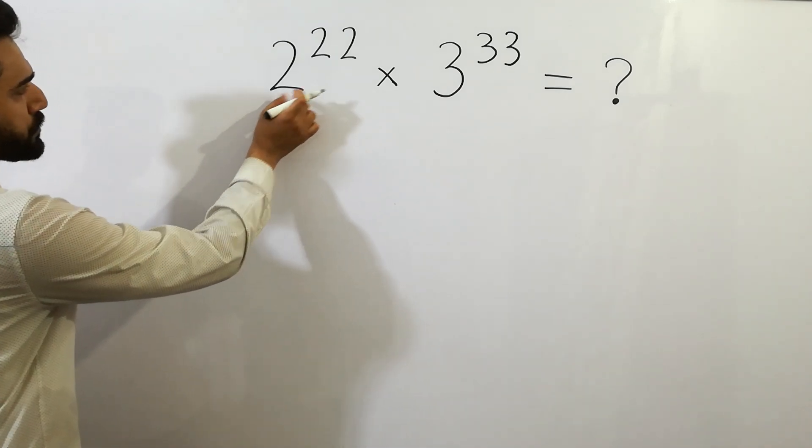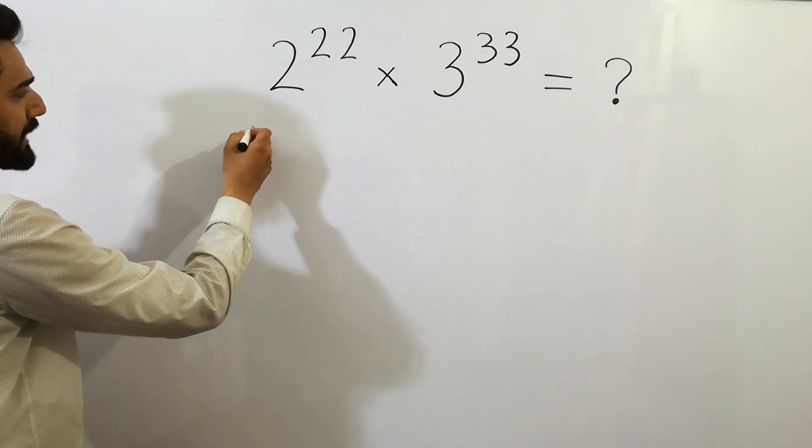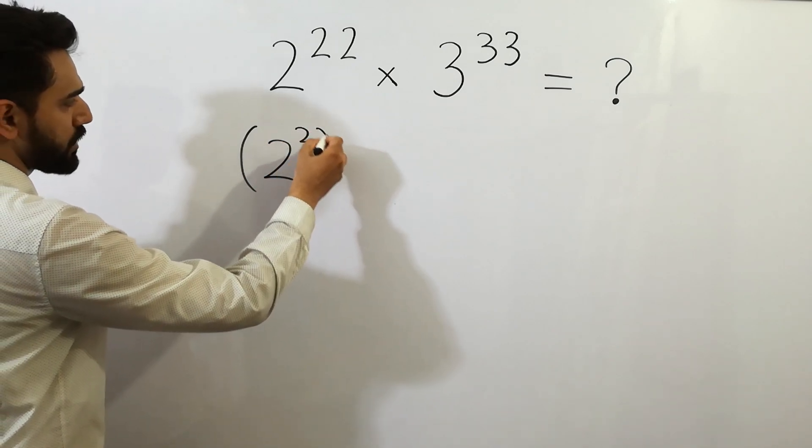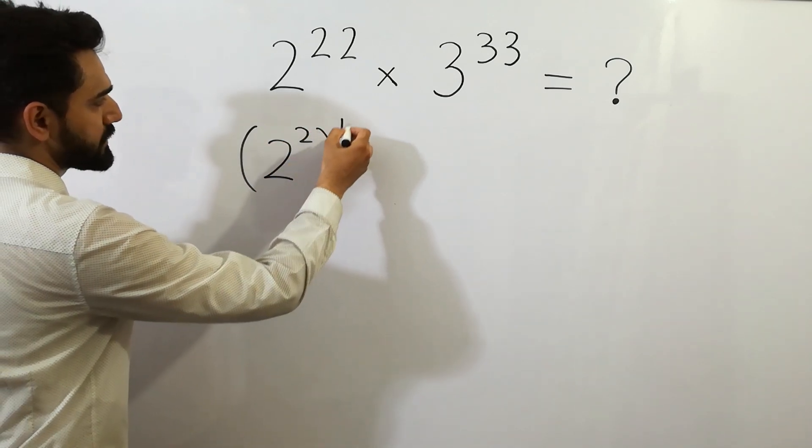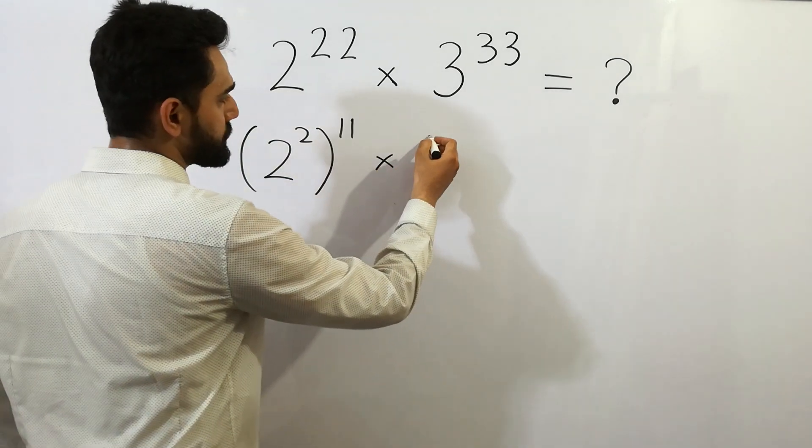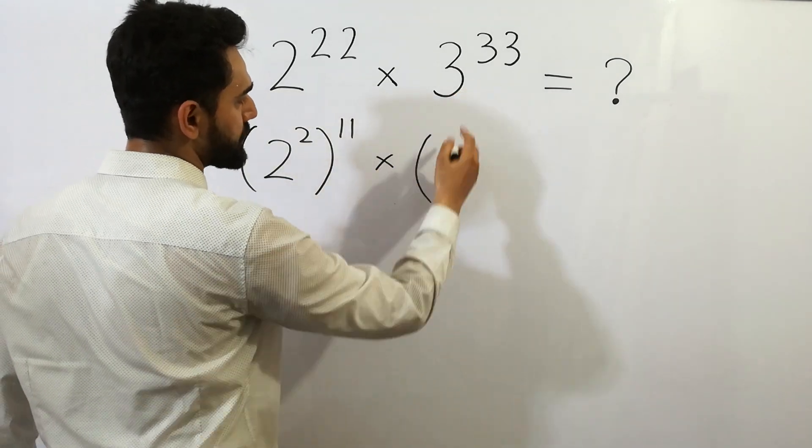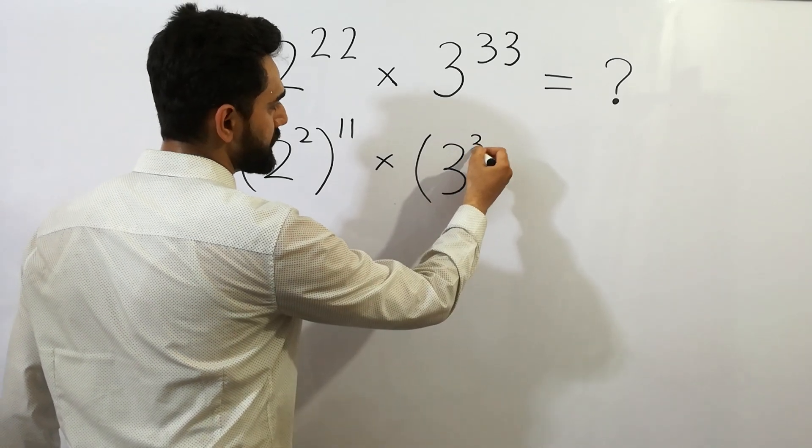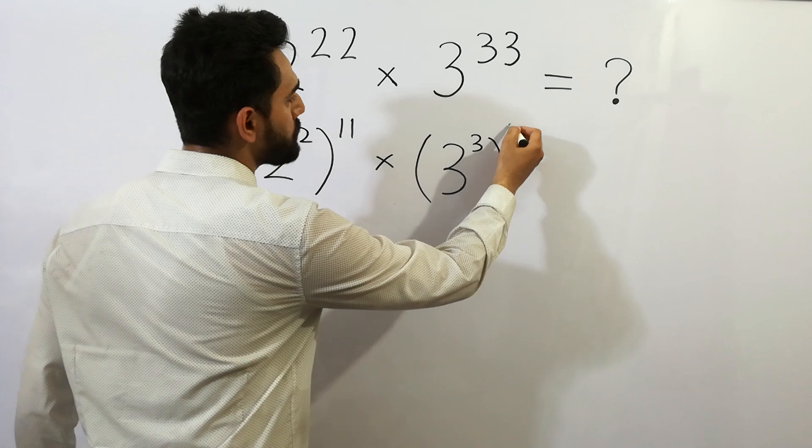Here, 2 to the power 22 can be written as 2 to the power 2 to the whole power 11, times 3 to the power 33, which can be written as 3 to the power 3 to the whole power 11.